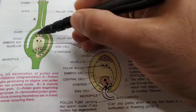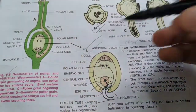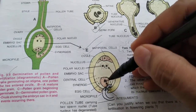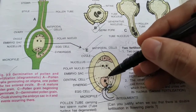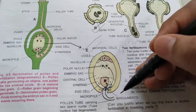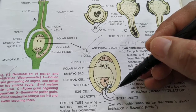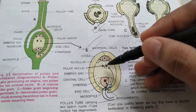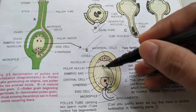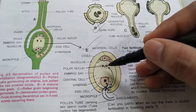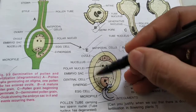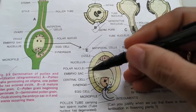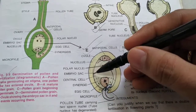Inside the ovule, which has now become the seed, we have the embryo. The zygote formed by fertilization will divide to form the embryo, which is a baby plant. The synergids and antipodal cells will all disappear, but the endosperm formed by the triple fusion will remain inside the seed. The integuments — the two layers — will form the seed coat called the testa and the tegmen.